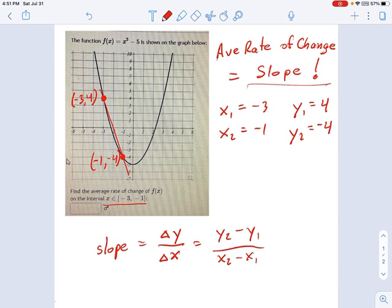So we have up here our numbers. See, they were in the graph for us. It was very nice. This is negative 4 for y2 minus 4, which was y1, over negative 1 minus negative 3.